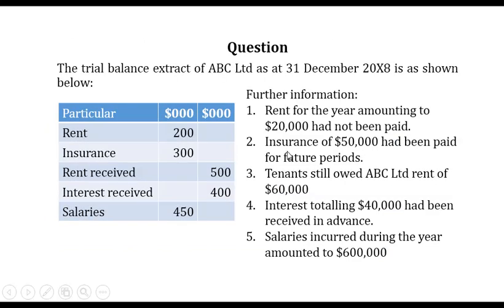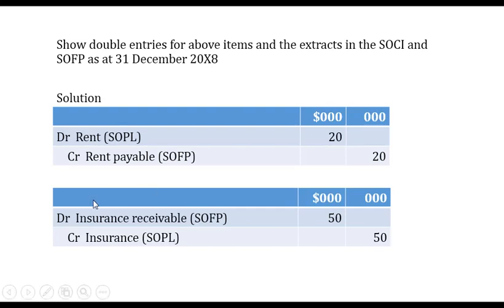For insurance, we paid three hundred thousand during the year, but note two tells us insurance of fifty thousand dollars had been paid for future periods — so we overpaid by fifty thousand. The insurance that should have been charged during the year is three hundred less fifty. That fifty becomes an asset — insurance receivable in the statement of financial position. The double entry: debit insurance receivable fifty thousand as an asset, and credit insurance fifty thousand to reduce the expense.